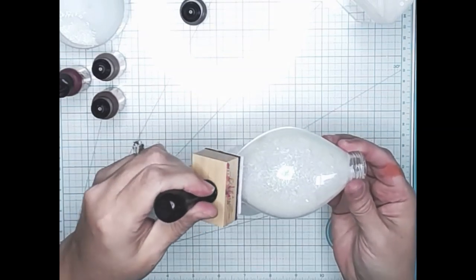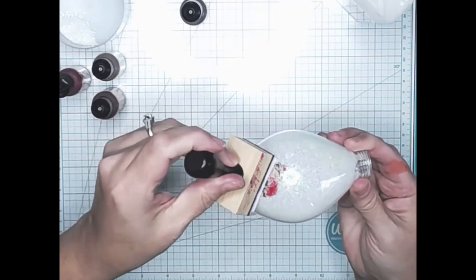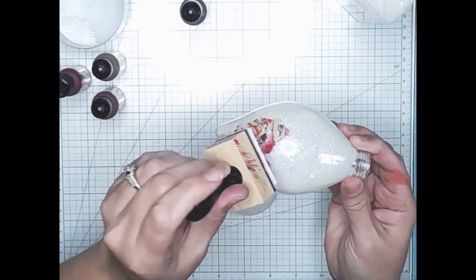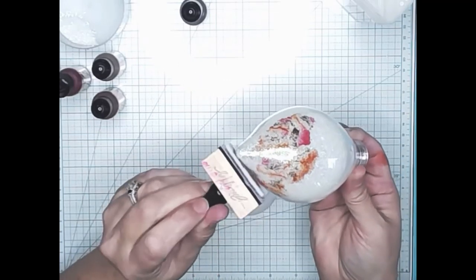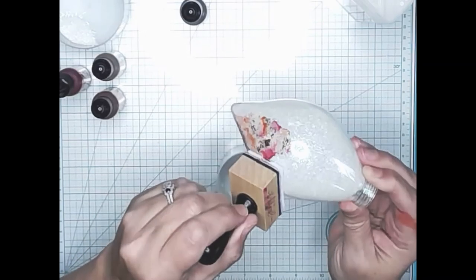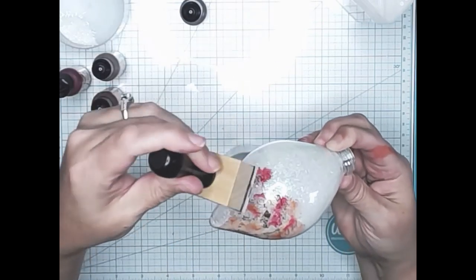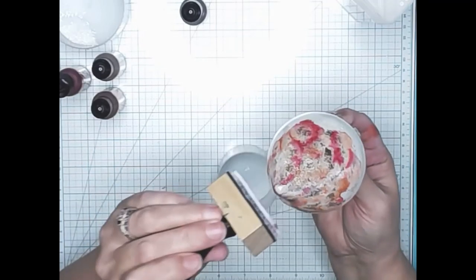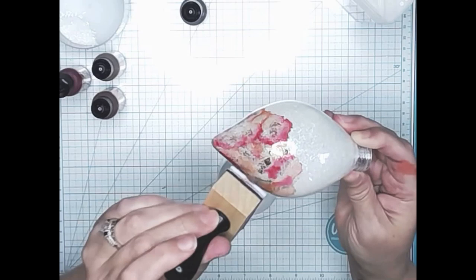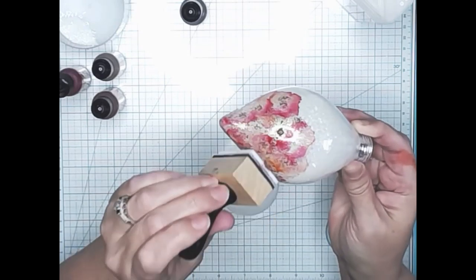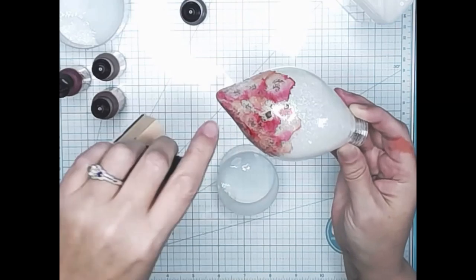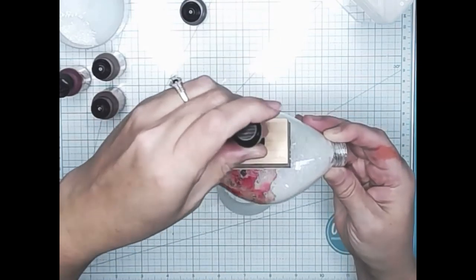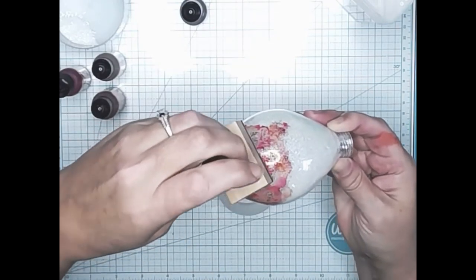All right, and now we are just going to start working our ornament and I'm just going to start moving this around in random patterns all around my ornament. And the more I work the areas, you'll see you'll start getting some marbleization and some veining and it's a really cool look once we get this finished.